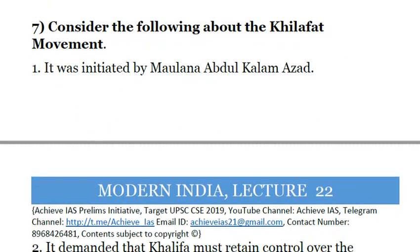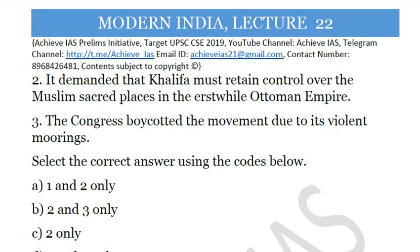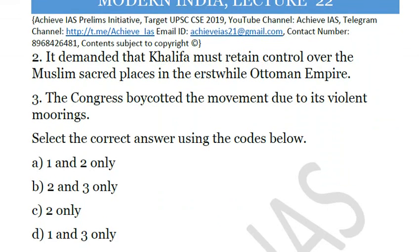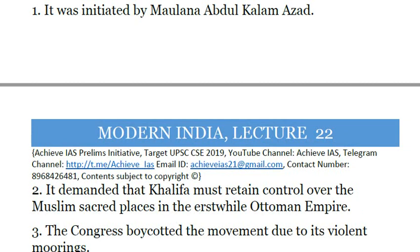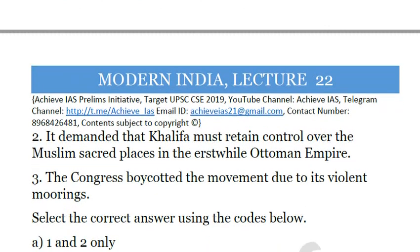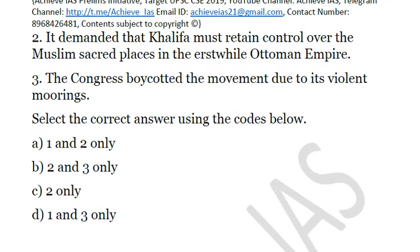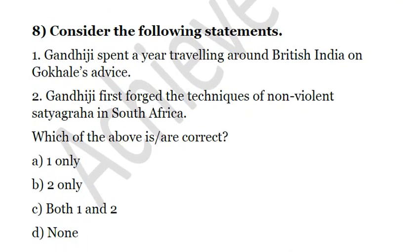Question 7: Consider the following about the Khilafat Movement. First, it was initiated by Maulana Abul Kalam Azad. Second, it demanded that the Khalifa must retain control over the Muslim sacred places in the erstwhile Ottoman Empire. Third, the Congress boycotted the movement due to its violent moorings. The answer is Second only. The movement was not initiated by Maulana Azad — it was initiated by Shaukat Ali and Maulana Ali, the Ali Brothers. Congress in fact supported the movement; Gandhi saw it as an opportunity to unite Hindus and Muslims. The answer is B.